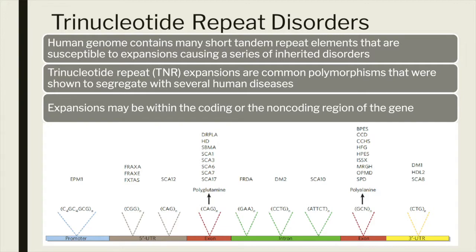Not all repeat disorders need to be trinucleotide repeats. There are tetranucleotide repeats, pentanucleotide repeat disorders, even decanucleotide repeat disorders described. The diagram below shows the 30-odd repeat disorders that are known in humans and the locations of all these repeat disorders. The repeats may be in the coding region of the gene or the non-coding region of the gene. They may even be in the promoter region of the gene. Each of these locations where the repeat occurs also has certain characteristics pertaining to that disease.